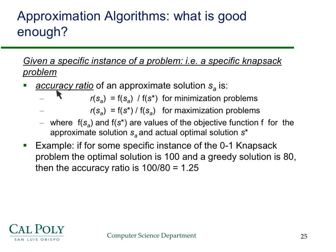The problem with the accuracy ratio is that it's for a specific problem instance, and what we really want is something to measure it over all different instances of the problem. As a quick example, suppose we're doing 0-1 knapsack — a maximization problem. If the optimal solution is 100 and some greedy solution gives 80, then the accuracy ratio is 1.25, giving you a feel for how this works on a real problem.